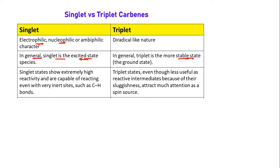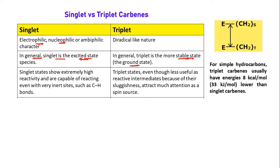In general, triplet is more stable and thus the ground state. If you look at the diagram here for CH2 — the simplest carbene where both R groups are hydrogen — triplet carbene is observed to have 8 kilocalorie per mole (or 33 kilojoule per mole) lower energy compared to singlet carbene. This energy gap applies for simple hydrocarbons, but we will also see exceptions.